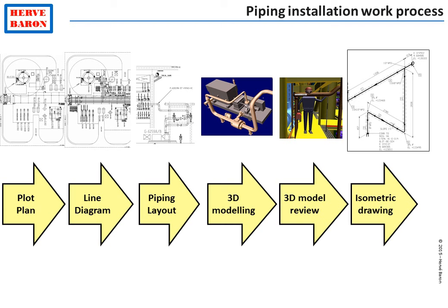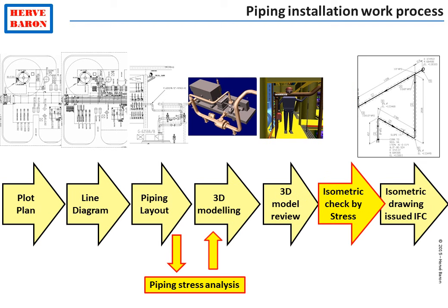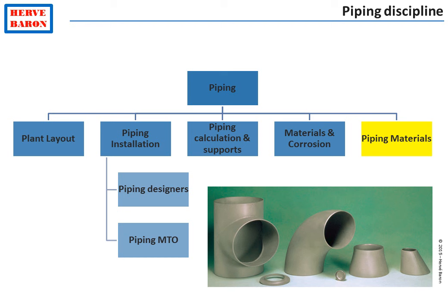Now that we have seen the work of the piping stress and support engineer, let's see how it integrates with the piping installation work sequence. Once the piping layout has been done and a proposed routing has been chosen for a line, it is checked by the piping stress analysis. In case any changes are required, they are fed back into the 3D model. Finally, before any isometric is issued for construction, it is checked by stress for compliance with the calculation note, in particular the position of supports.